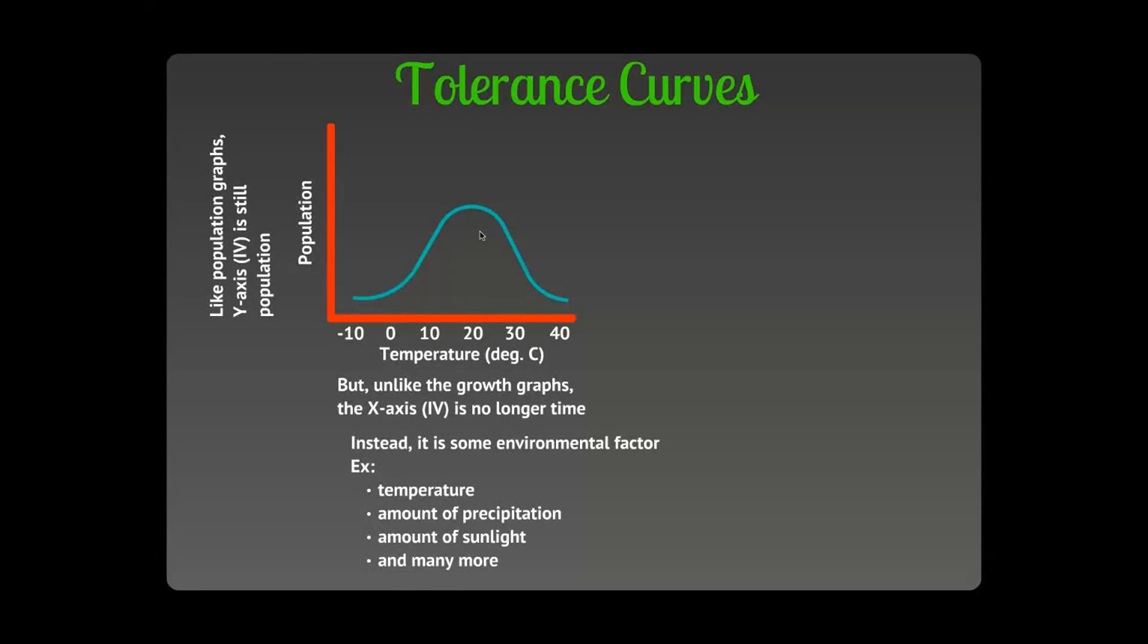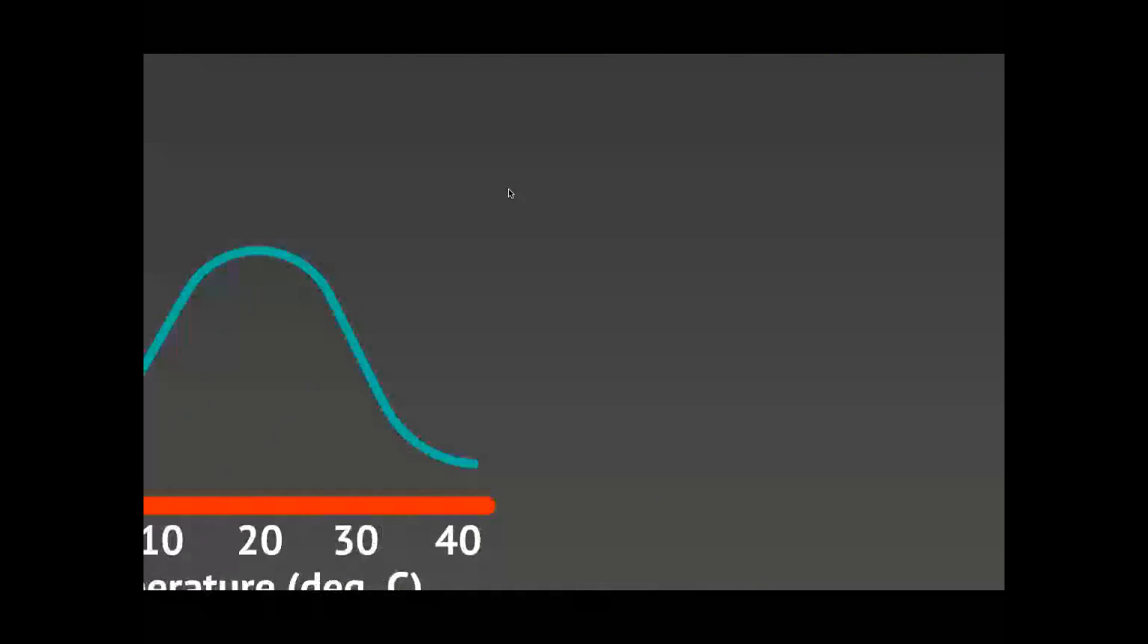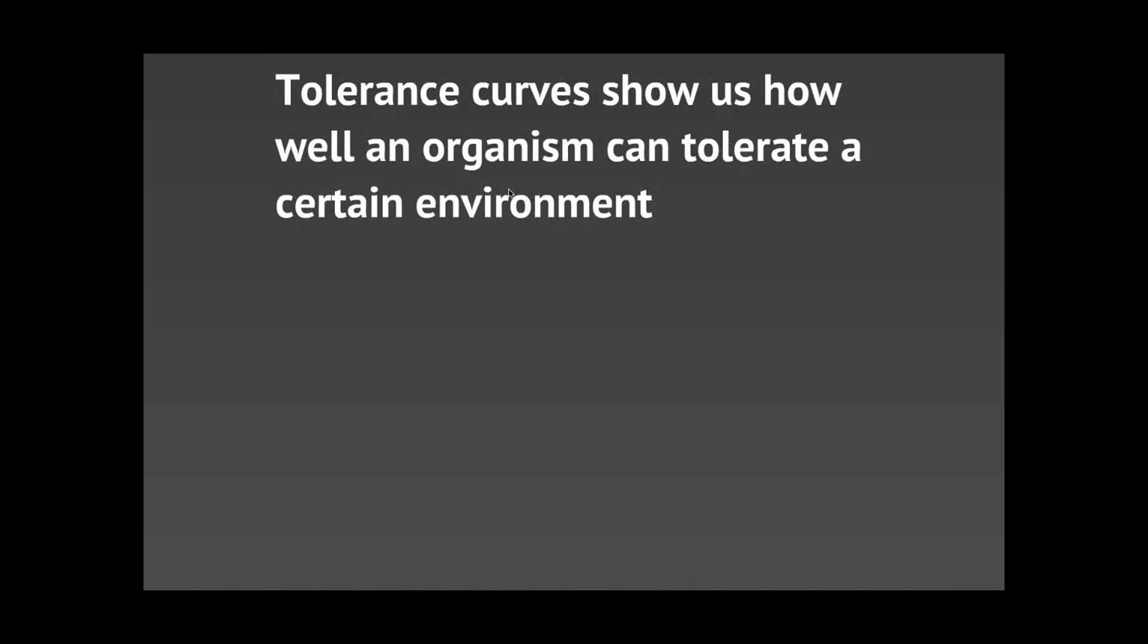You can see over here when it's 20 degrees the population is very high. But if it gets a little hot, say about 40 degrees, the population dips down. And if it gets to about negative 10 degrees or zero degrees, the population dips down. So these areas that might have a temperature of 20 degrees, those are areas we're going to find this organism predominantly.